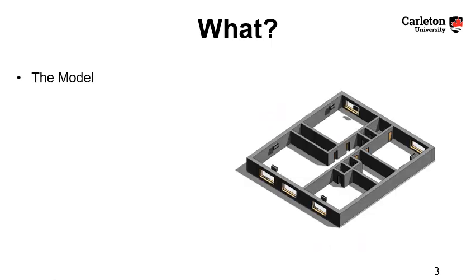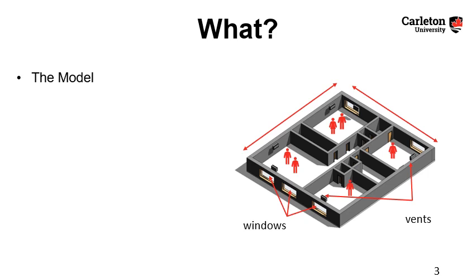Now for the what. The model that we use considers different configurations of the room, the dimensions for example. It also considers CO2 sinks and those are the windows and the vents, the reasons why CO2 concentration usually decreases in a room. The doors as well. And it also considers CO2 sources and those are occupants breathing and constantly adding CO2 to the room.